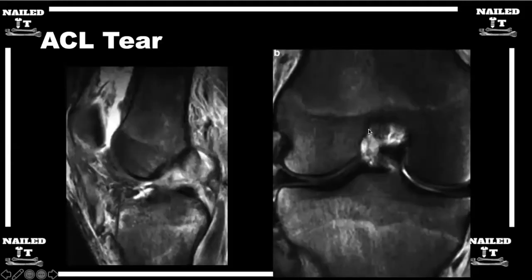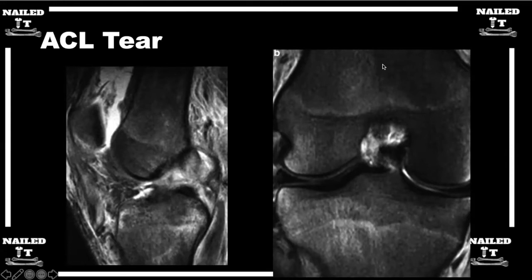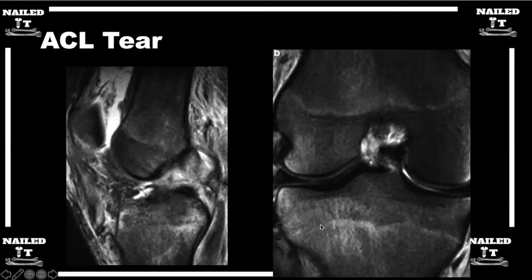If you look from the coronal image, what you should look for — one of my colleagues, a former attending as a fellow, called it the Eiffel tower sign. So if you get in the coronal image, you should see the branching off from top to bottom of what looks like an Eiffel tower for the ACL's insertion onto the tibia. And if you lose that and you have a split in it — a horizontal split sectioning it off from its insertion on the femur or the tibia — then you have a tear, and you're starting to see some of that bone bruising on the lateral side of the knee there in the coronal fashion.